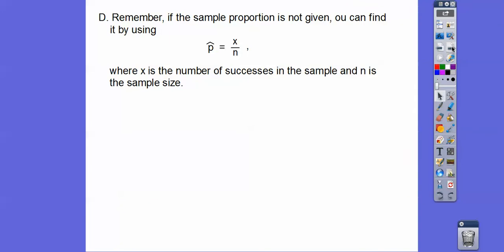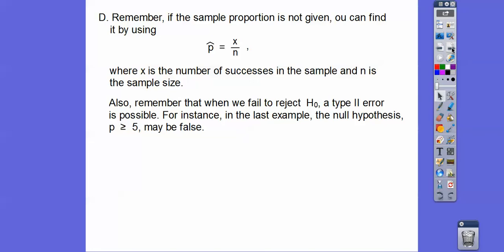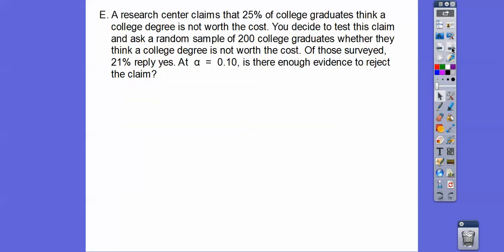Remember, if you don't know your sample proportion, you can find it by doing X over N, where X is the number of successes divided by your sample size. Also remember that when we fail to reject the null hypothesis, you might get a type two error. For example, in the last example, the null hypothesis that P is greater than or equal to 0.5 might be false.